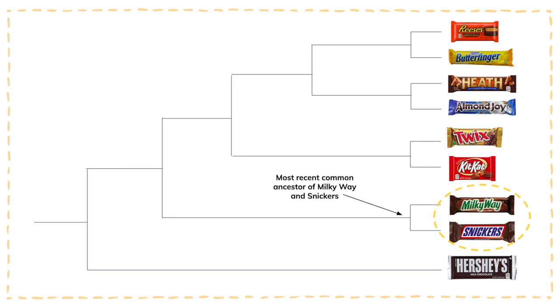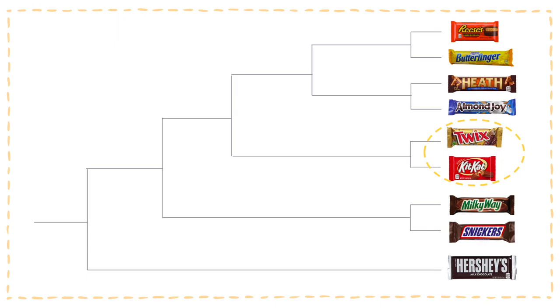The next operational taxonomic unit contains the Twix bar and the Kit Kat bar. These two candy bars share a common ancestor that evolved to contain wafers, since they both contain milk chocolate and cookie wafers.